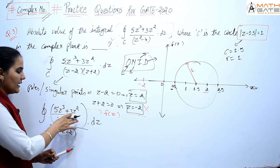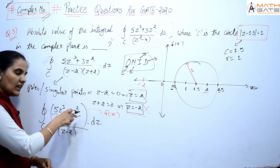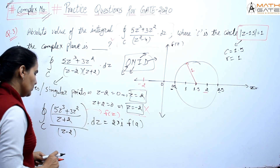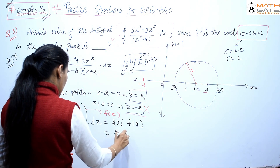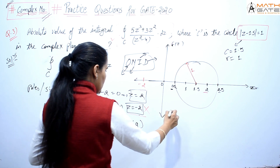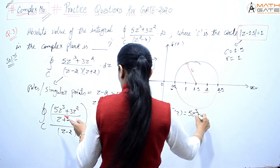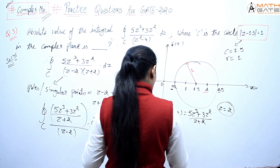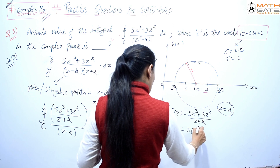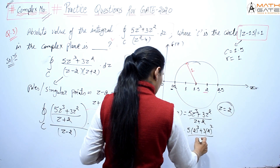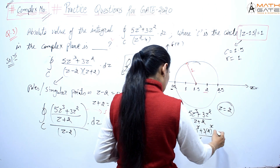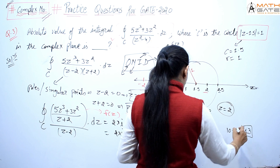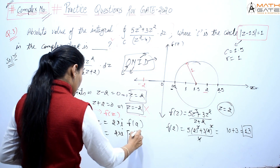By Cauchy's integral formula, closed integration C of f(z) / (z - a) dz = 2πi · f(a). So here it equals 2πi · f(2), where f(z) = (5z³ + 3z²) / (z + 2). Substituting z = 2: f(2) = (5×8 + 3×4) / (2 + 2) = (40 + 12) / 4 = 52/4 = 13. So the integral = 2πi × 13 = 26πi.